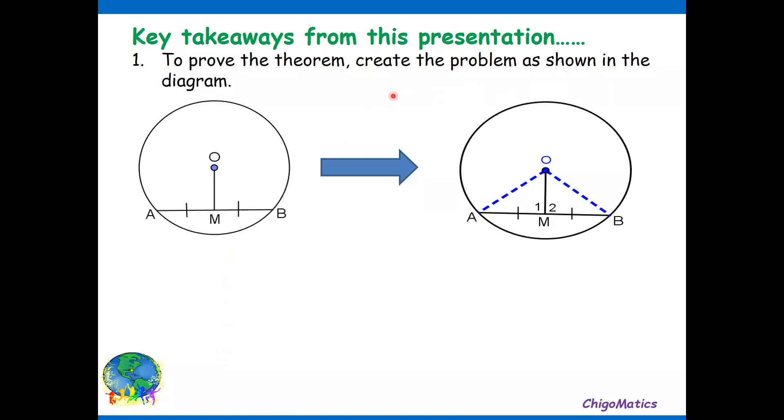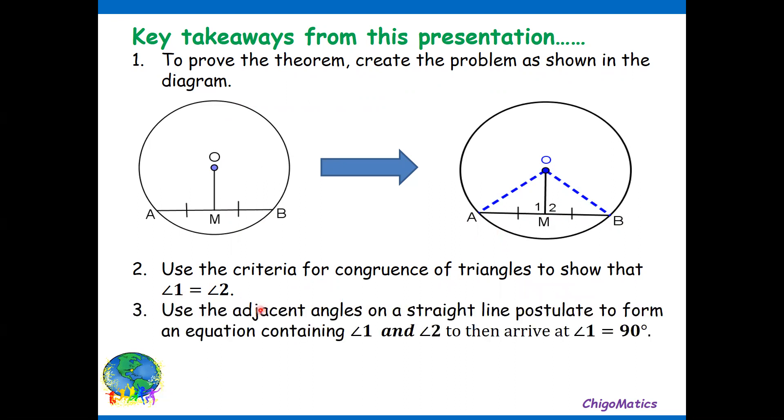Key takeaways from this presentation: to prove the theorem, create the problem as shown in the diagram. This is what will be given. Then you create the blue lines, your own construction, and then you give the name to the angles formed in the triangle so that you can use the criteria for congruence of triangles to show that angle one is equal to angle two. Use the adjacent angles on a straight line postulate to form an equation containing angle one and angle two to then arrive at angle one equals 90 degrees. I hope you understood. Thank you very much.